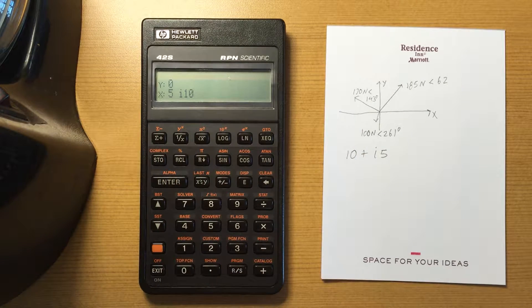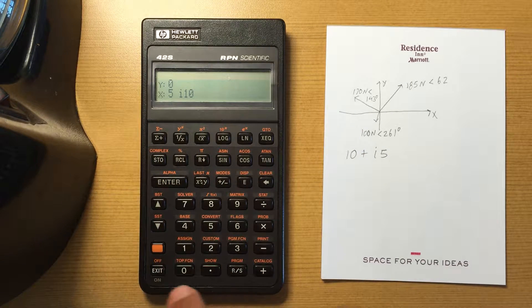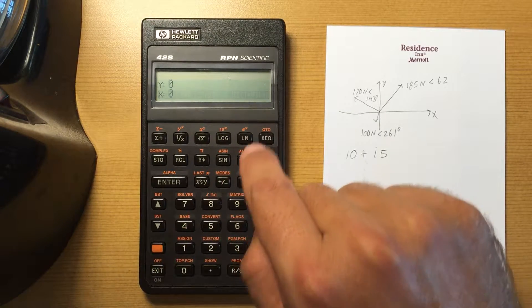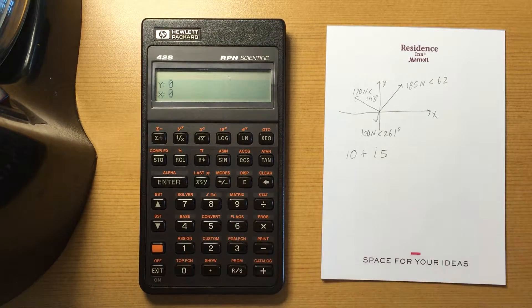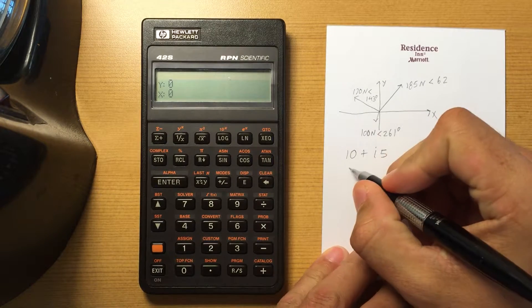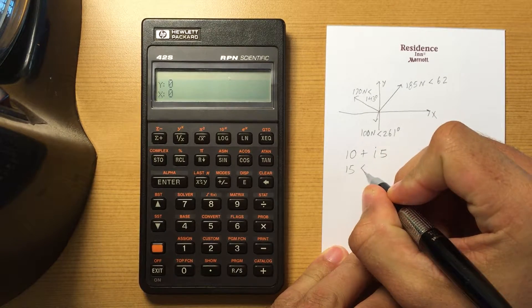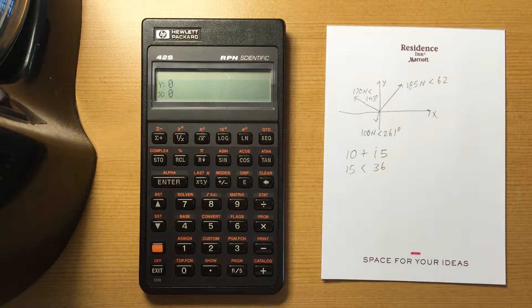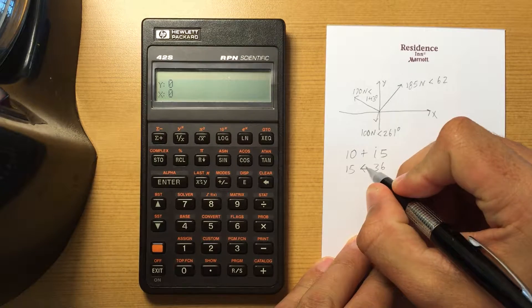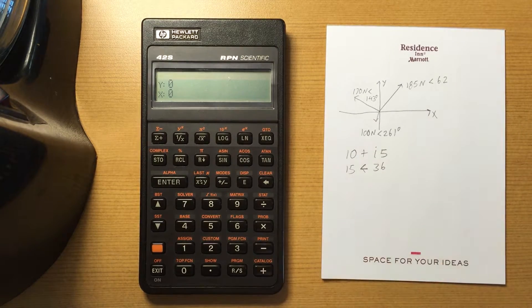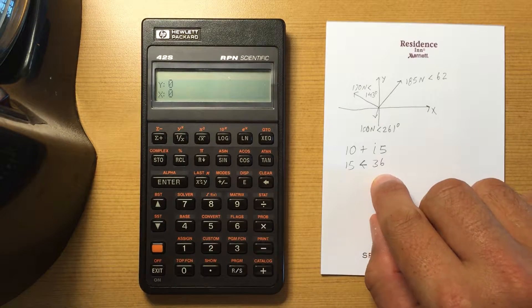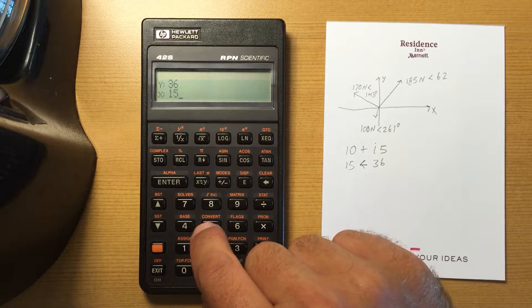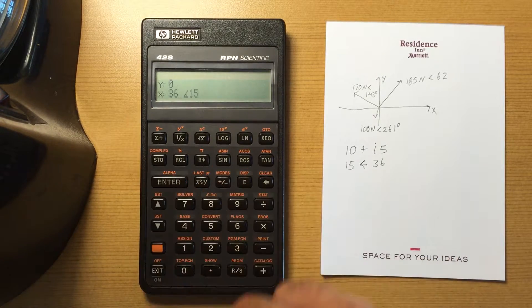If I were in polar mode and I wanted to enter in 15 at angle 36, that's a terrible angle symbol, and again I'd enter in the angle first, so 36 and 15 and do complex.